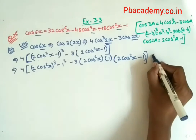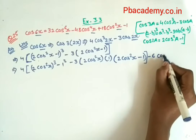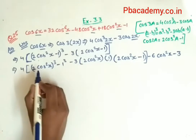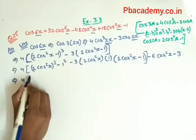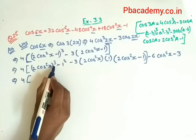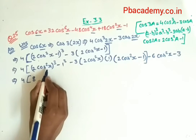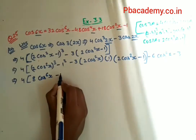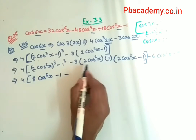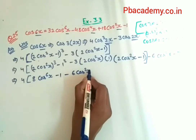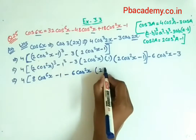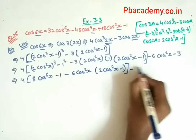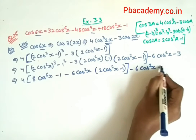It will become: 2 cubed is 8, so 8 cos⁶x minus 1, minus 6 cos²x multiplied by (2 cos²x − 1), and the outside term gives minus 6 cos²x minus 3. So expanding, we get 8 cos⁶x minus 1 minus 12 cos⁴x plus 6 cos²x, minus 6 cos²x minus 3.